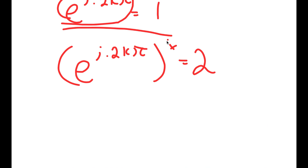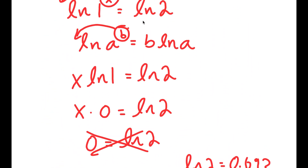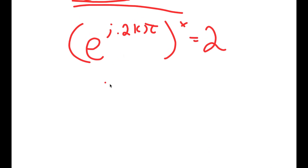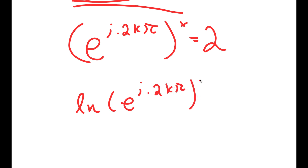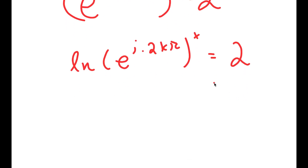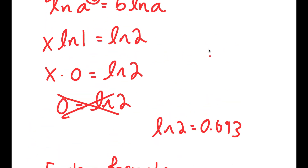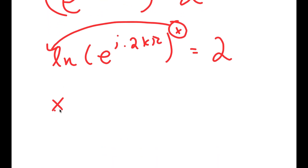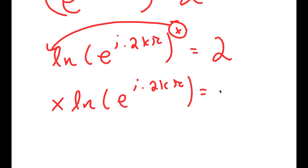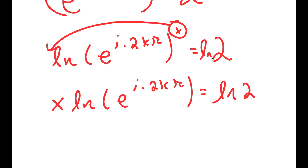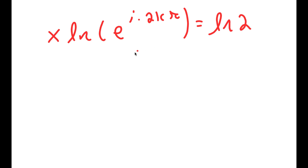Now, if we solve for x, I'm going to do the same thing as before — take the natural log on both sides. So I get ln of e to the power of i times 2k pi, to the power of x, is equal to ln of 2. Using the rule that ln of a to the power of b equals b times ln a, I can move x to the front, giving x times ln of e to the power of i times 2k pi equals ln of 2.